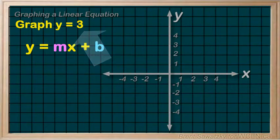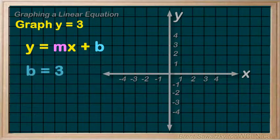Well, since our three is not being multiplied by our variable x, the three must be our b. That is, it's all by itself there. And therefore we don't have an m in our equation.